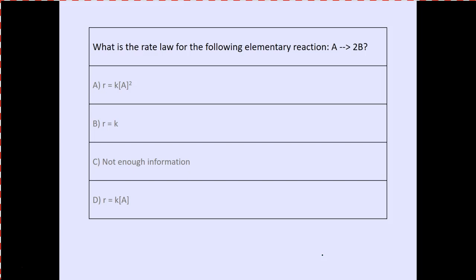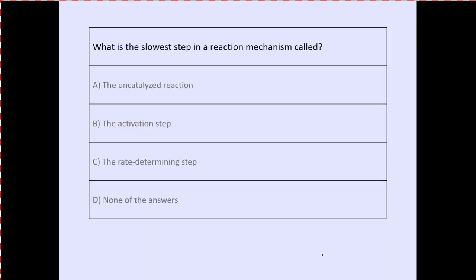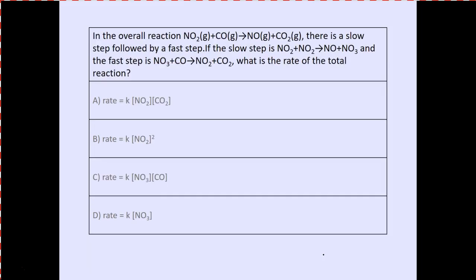What is the rate law for the following elementary reaction? This is an elementary step — the answer should be D. What is the slowest step in a reaction mechanism called? The rate-determining step. For the overall reaction N2O + CO with a slow step NO2 + NO2 → NO + NO3, followed by a fast step NO3 + CO → NO2 + CO2 — the rate of the total reaction comes from the slow step: answer B.